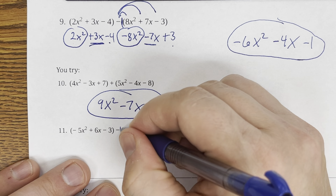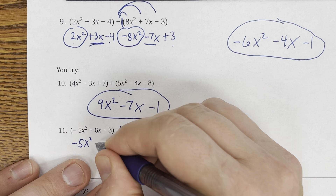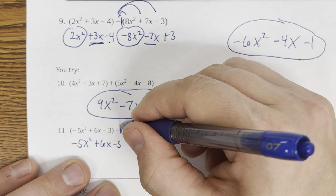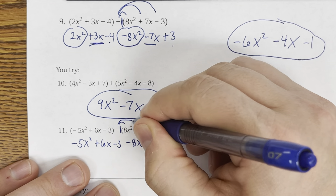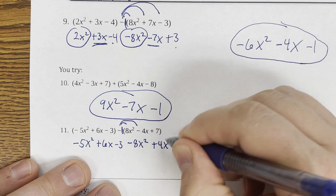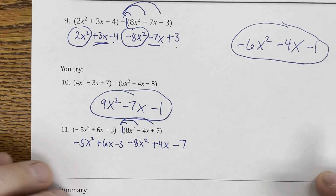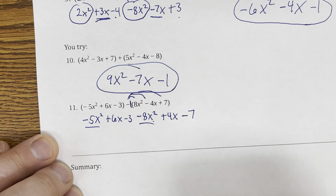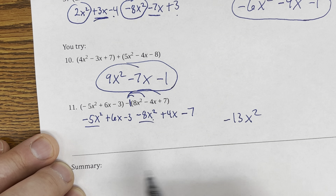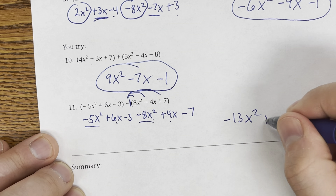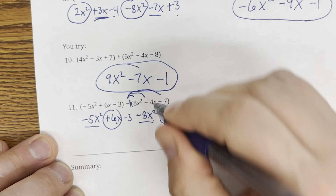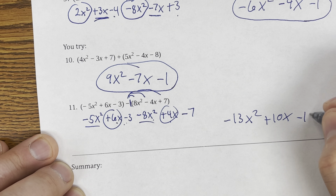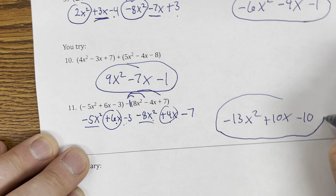For the subtraction problem, make sure you distribute the negative. Rewrite the first polynomial: negative 5x squared plus 6x minus 3. Now distribute the negative to the second: negative 8x squared plus 4x minus 7. Combine like terms: negative 5 and negative 8 gives negative 13x squared. Then 6x and 4x is 10x. Then negative 3 and negative 7 is negative 10. So the answer is negative 13x squared plus 10x minus 10.